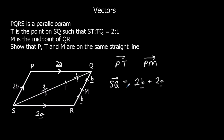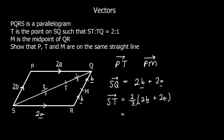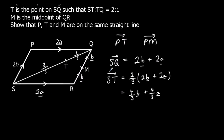So S to T: since ST is two thirds of SQ, S to T is two thirds of (2b + 2a), which expands to give four thirds b plus four thirds a. We should now have everything we need to work out P to T and P to M.